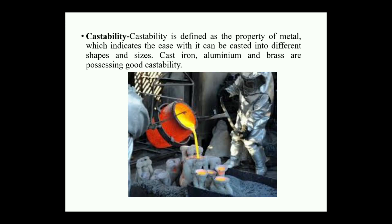Castability is defined as a property of the metal which indicates the ease with which it can be cast into different shapes and sizes. Generally, cast irons, aluminiums, and brass have good castability — you can easily melt the particular metals, pour them into a die, and make the cast product.